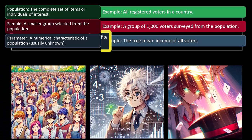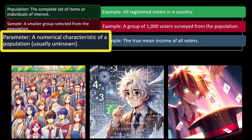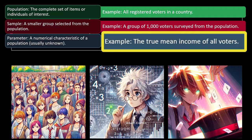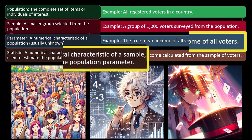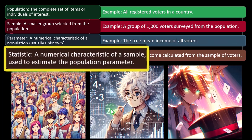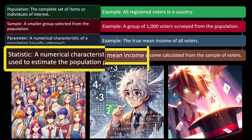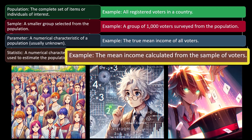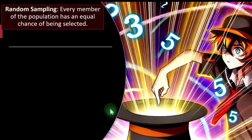A parameter is a numerical characteristic of a population — it's usually unknown. For example, the true mean income of all voters. A statistic is a numerical characteristic of a sample, used to estimate the population parameter. For example, the mean income calculated from the sample of voters.